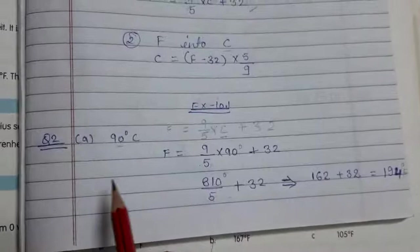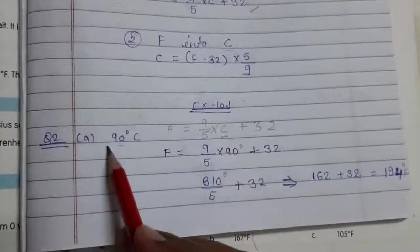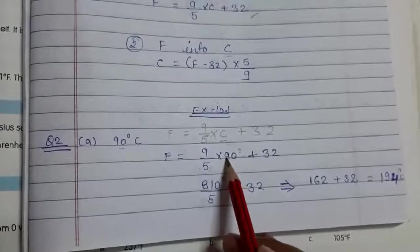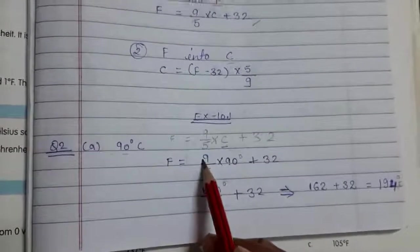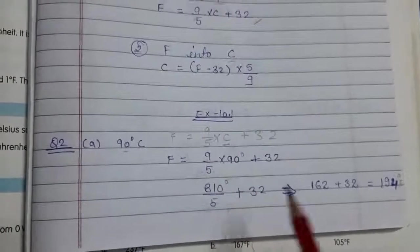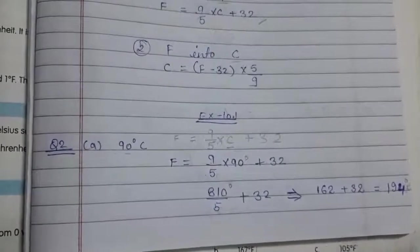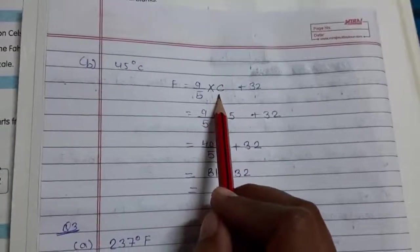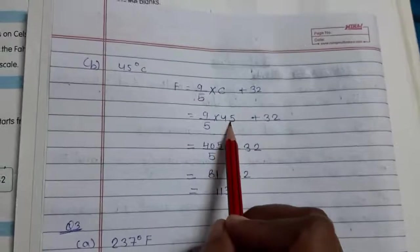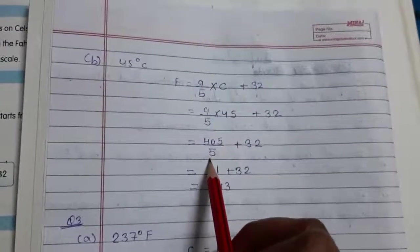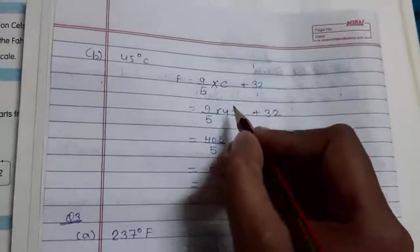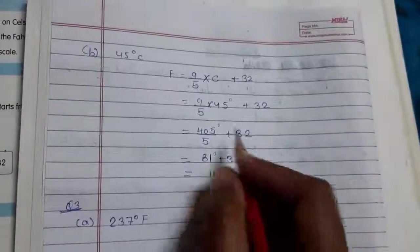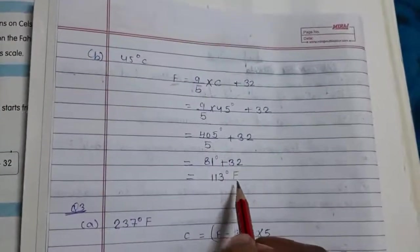To do this type of question, replace the C with the digit given in the question, then multiply numerator to numerator. For 45 degrees Celsius: replace C with 45, multiply 45 × 9 = 405, divide by 5 to get 81, then add 32 to get 103 degrees Fahrenheit. Write the F symbol at the end of your answer.